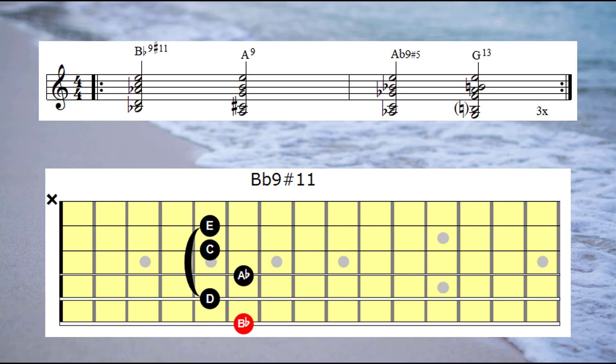And if we think that through you'll see that's exactly the same idea with the Ab9 sharp 5. That's just another name for a D7 sharp 5 with the b5 in the bass. Okay, we've still got this constant E as the top note. Let's have a listen to how that sounds.